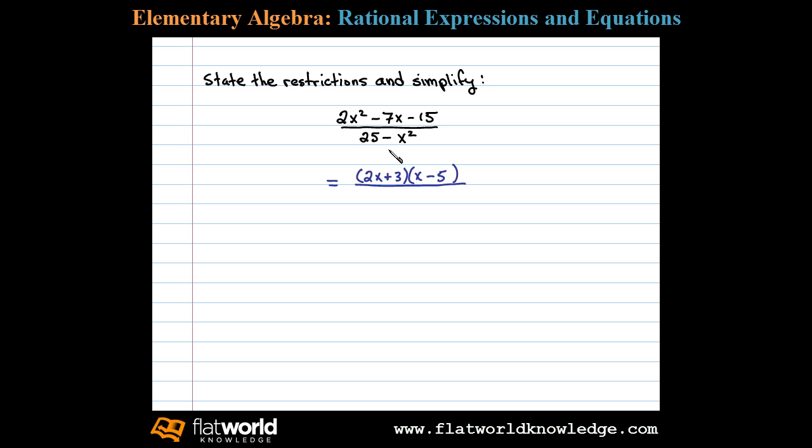This is factored correctly. Now in the denominator I notice a difference of two squares. This factors as (5+x)(5-x). Once we have the denominator factored, we can then determine the restrictions.